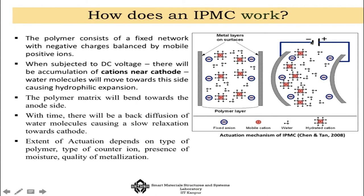When a cathode is attached, the water molecules present inside the IPMC start moving massively towards the cathode direction. As the water molecules are driven to one side, that side bends — more water molecules accumulate there causing bending. Over time some water molecules back-diffuse, which corresponds to relaxation. A large bending can be generated in this kind of material, but one precondition is that it needs to be wet, because only then does the movement of water molecules toward the cathode create the large hydrophilic expansion in the system.